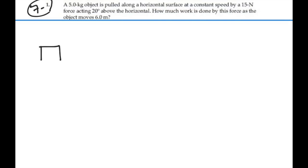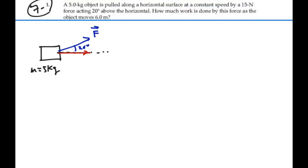So let's visualize what we have here. We've got a 5 kilogram object — so mass is 5 kilograms — being pulled on by a force that is 20 degrees above the horizontal. The magnitude of the force is 15 newtons, that's 20 degrees. And we're going to pull it for 6 meters. So we have some kind of displacement as well — displacement's a vector. So the force we're pulling with is 15 newtons, and this displacement is 6 meters.